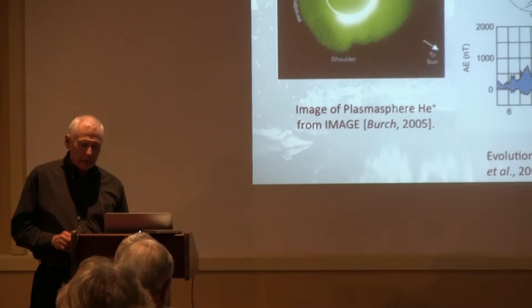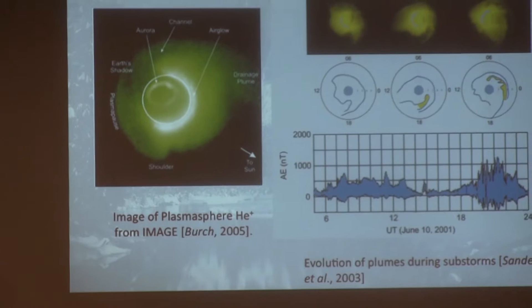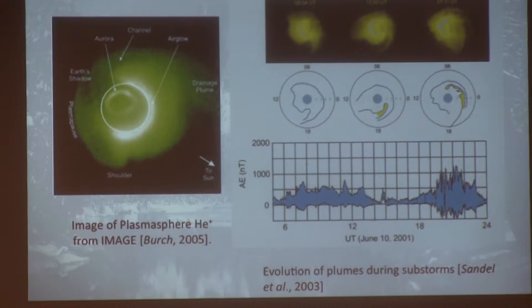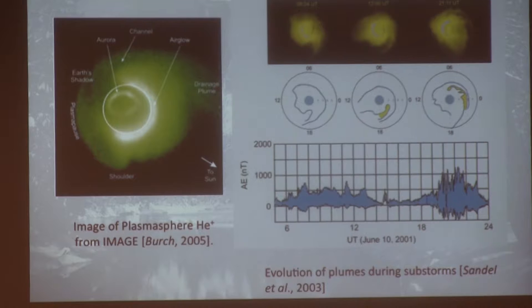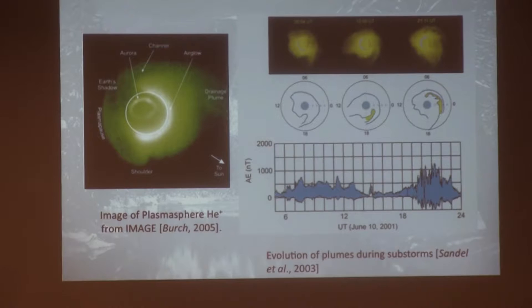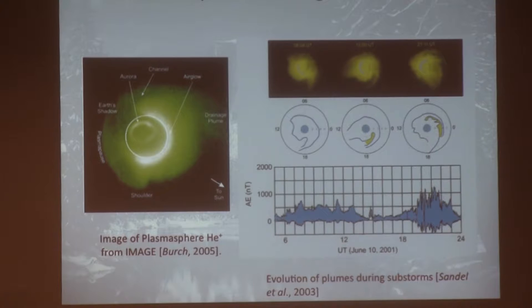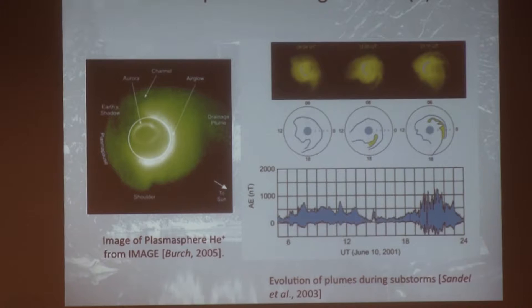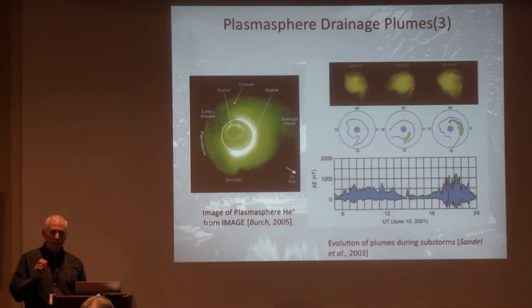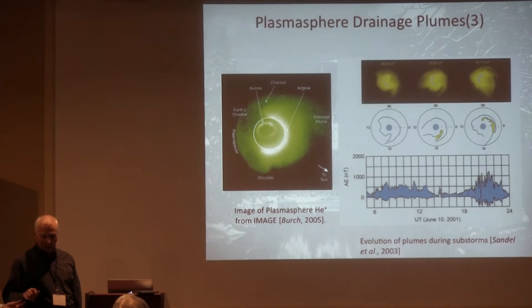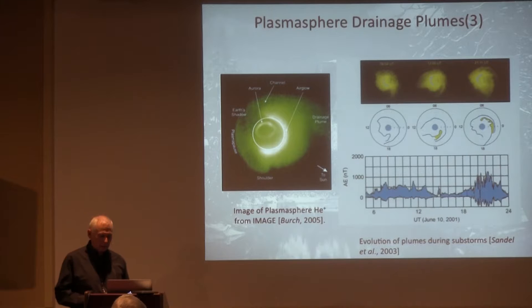Remember those two pictures. Now here's the IMAGE view. On the left you see the drainage plume. You can see a lot when you look down with EUV — resonantly scattered ultraviolet from sunlight — so you're looking at helium in the plasmasphere. You see the drainage plume, looks just about like predicted. Also see the airglow and the aurora. You see features like the shoulder on the lower left that we found was actually caused by IMF northward transitions in the solar wind.